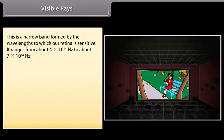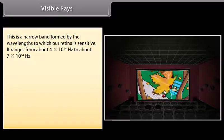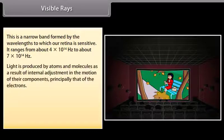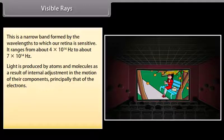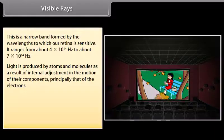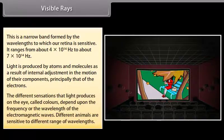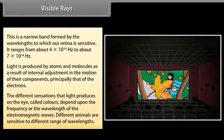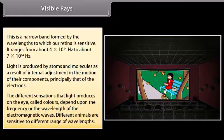Visible rays. This is a narrow band formed by the wavelengths to which our retina is sensitive. It ranges from about 4 into 10 raised to the power 14 Hz to about 7 into 10 raised to the power 14 Hz. Light is produced by atoms and molecules as a result of internal adjustment in the motion of their components, principally that of electrons. The different sensations that light produces on the eye, called colours, depend upon the frequency or the wavelength of the electromagnetic waves. Different animals are sensitive to different range of wavelengths.